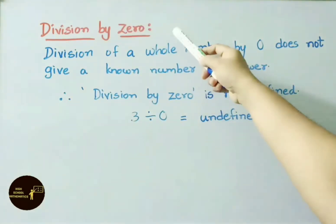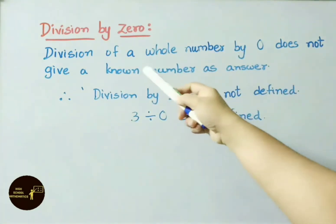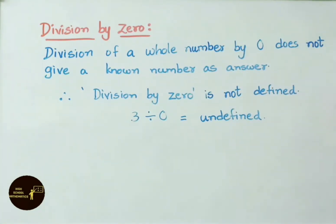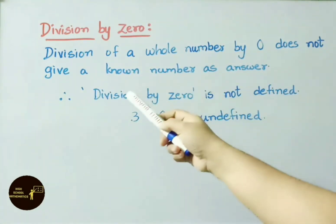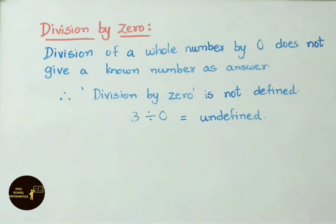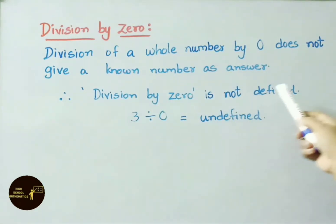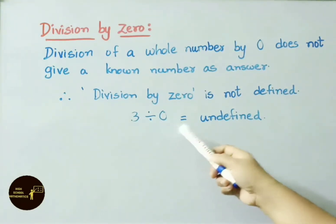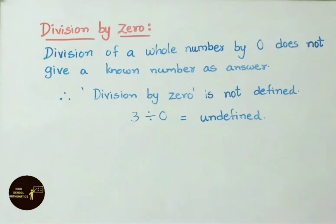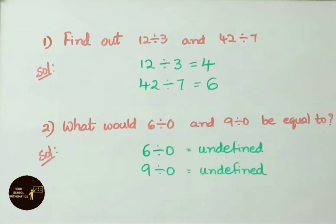Now let us see division by 0. Division of a whole number by 0 doesn't give a known number as answer. Therefore, division by 0 is not defined. For example, 3 divided by 0 is undefined. Any number divided by 0 gives an unknown value — that is undefined.